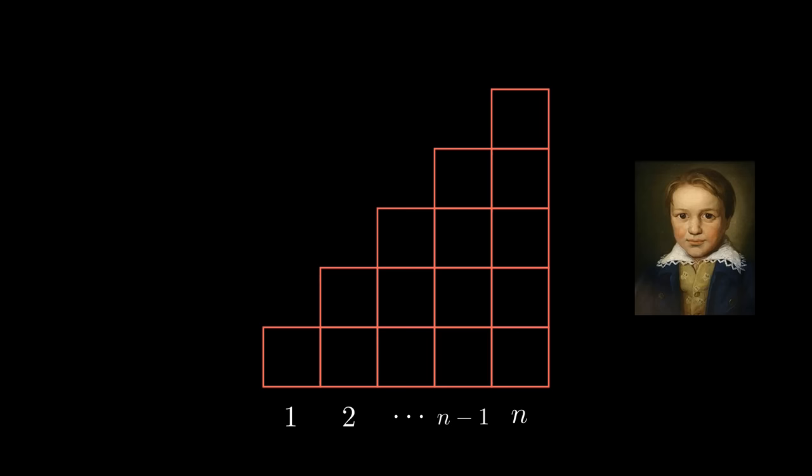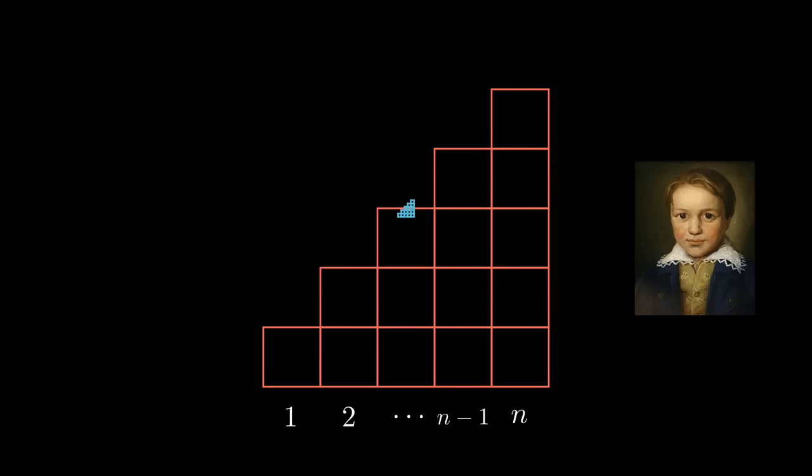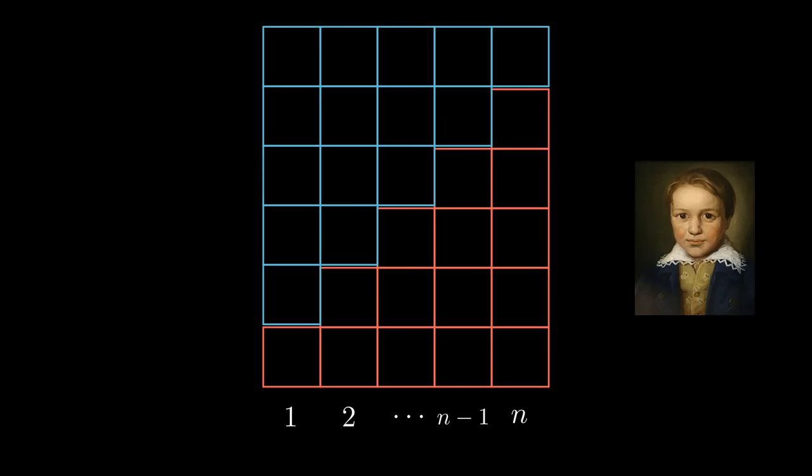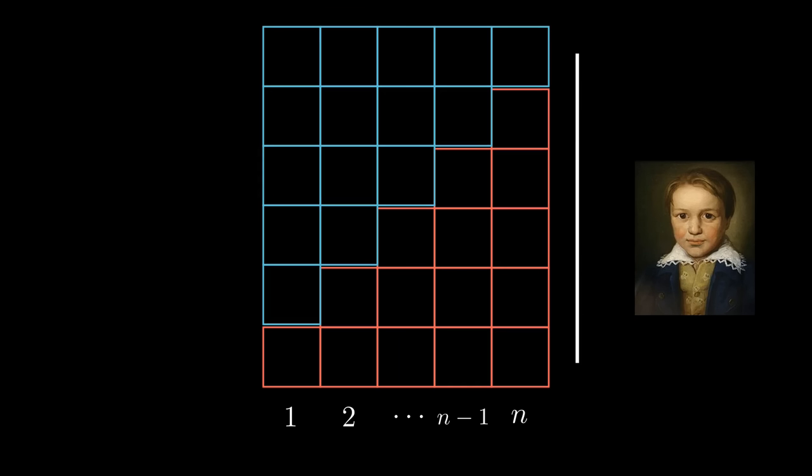Let us imagine rotating this staircase and placing a copy of it on top. We obtain this rectangle. The number of squares in the rectangle is therefore twice the sum, as it is made of two identical copies of the same staircase. The sides of the rectangle are therefore n plus 1 and n. The number of squares in the rectangle is n times n plus 1, and we derive the same formula once again.